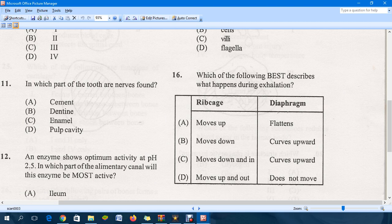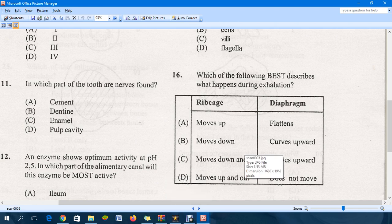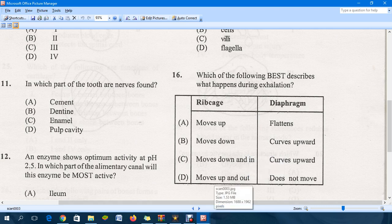Which of the following best describes what happens during exhalation? We need to look at the box right there and see which combination best describes exhalation, that is breathing out. Ribcage moves up, flattens? No. Diaphragm flattens? That's not answer B. Ribcage moves up, moves down, curves upward? No. C: ribcage moves down and in, and diaphragm curves upward. So C is the correct answer right there.